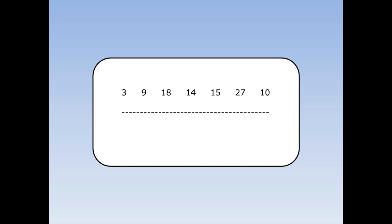For this list of numbers, the biggest number is 27, the smallest number is 3. 27 take away 3 is 24, so the range is 24.